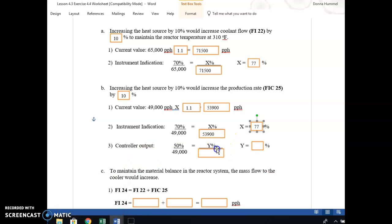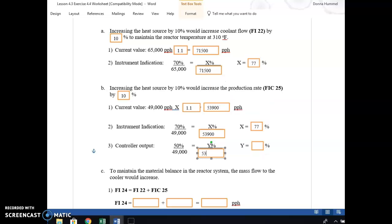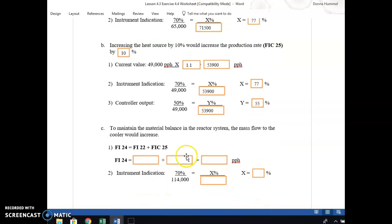Then the output of the controller now, because FIC is a controller, FIC25 is a controller. Normally, it's running a 50% valve opening at 49,000. So at our new number, we're going to put that new number in again, and that's 53,900. So our percentage of our valve opening now, in this particular instance, is 55%. Do that math, check it, make sure you got it.